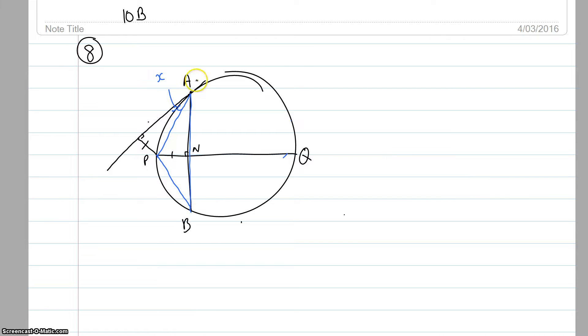which means using the proofs that we've learned in this topic, this angle here must be the same. Now all of a sudden I know that these two triangles are exactly the same, they're congruent.